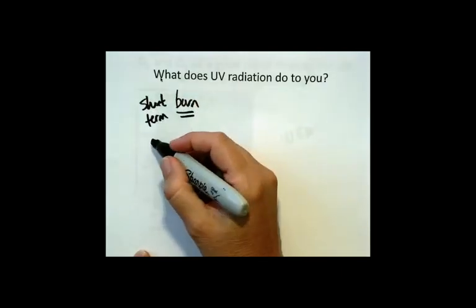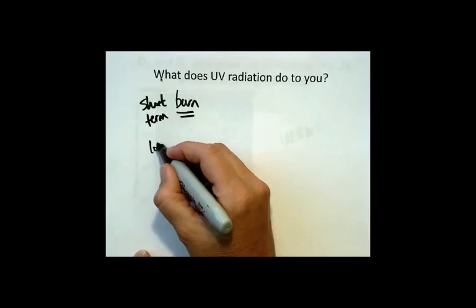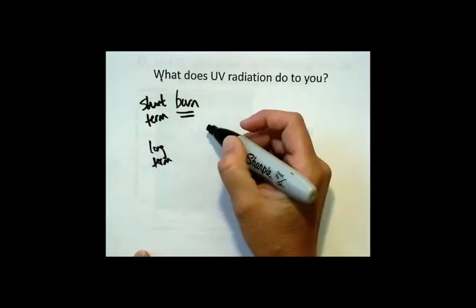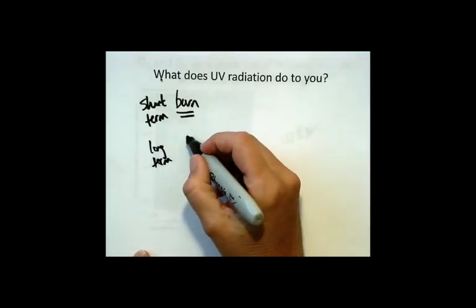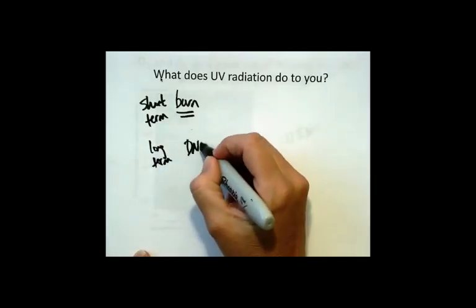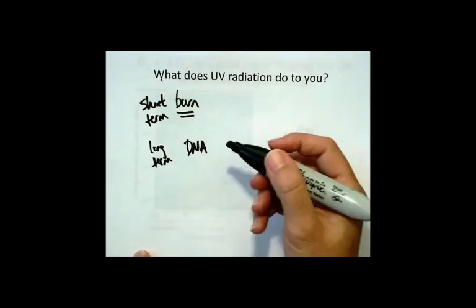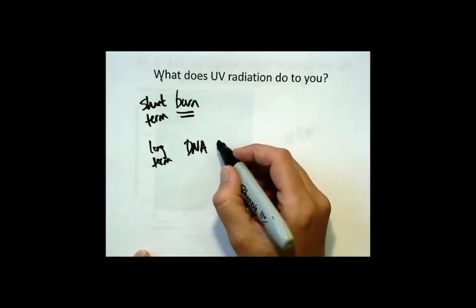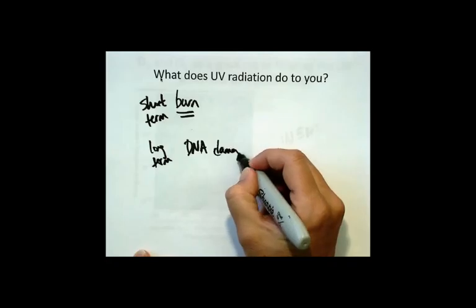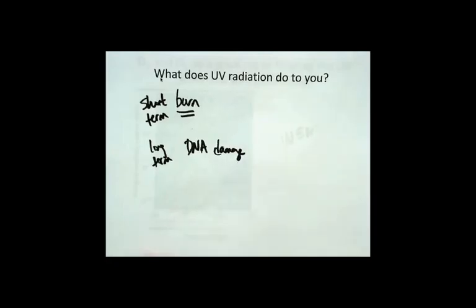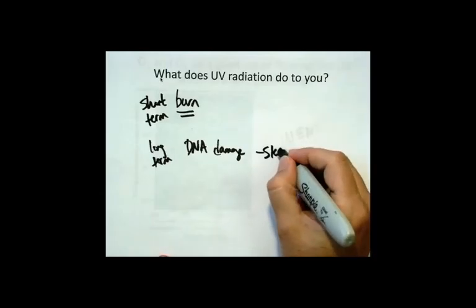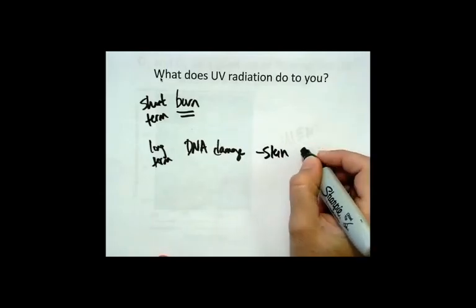Long term, UV exposure can cause DNA damage. Over time, it takes a lot of DNA damage to have a long-term effect, which can lead to cancer — in particular, skin cancer in humans.